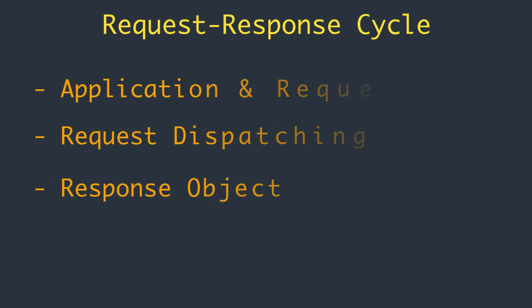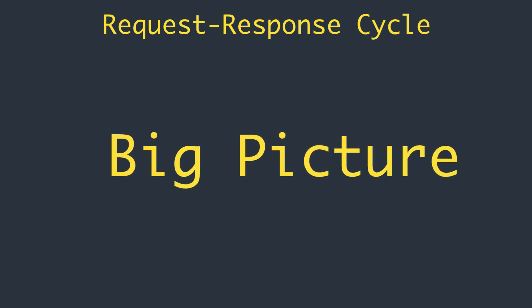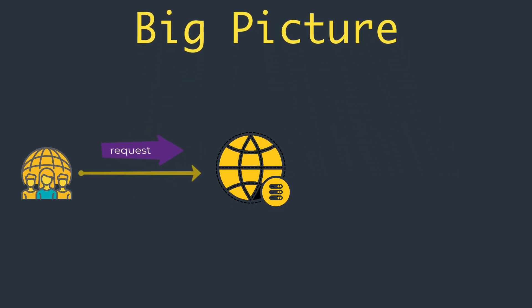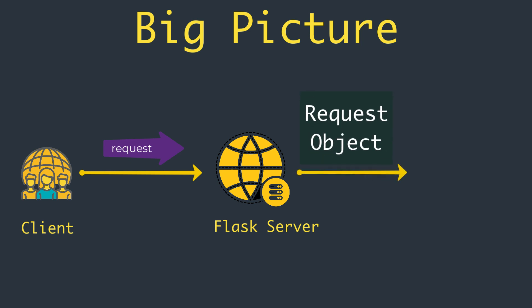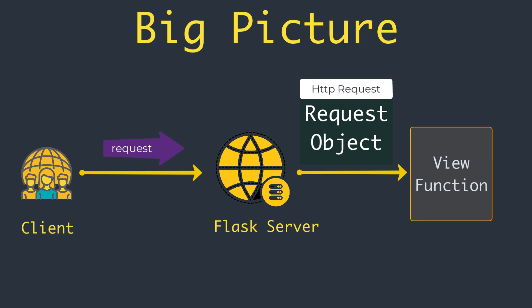Let's start with the big picture of request and response in Flask. First, a client makes a request to the Flask server. When Flask receives a request from a client, it needs to make a few objects available to the view function that will handle it. A good example is the request object, which encapsulates the HTTP request sent by the client.